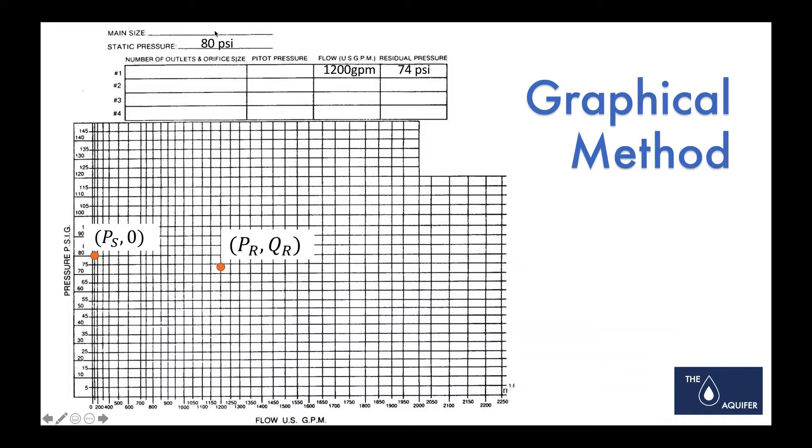And so we would go out and we would collect the static pressure and our residual flow here of 1,200 gallons per minute and pressure. This would be an example of something. I actually found this in my files when I was making this. This is actually based on one of the first ones I ever did when I was trying to figure out how the graphical method worked. So here's your static pressure out here with no flow and pressure and then your residual pressure and flow here.